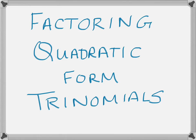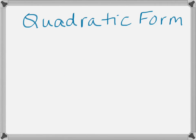Tonight we're going to learn about factoring quadratic form trinomials. Before we learn how to factor them, we have to know what they are. A quadratic form trinomial is a trinomial in which the middle term exponent is one half of the first term exponent. In this case, the middle term is x to the first, and the first term is x to the second.